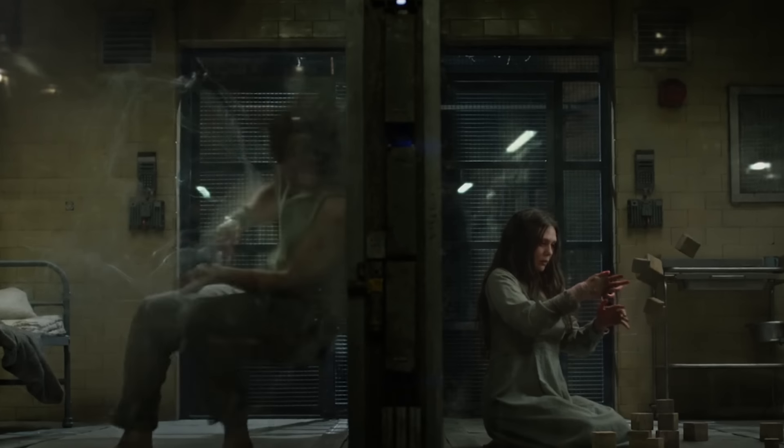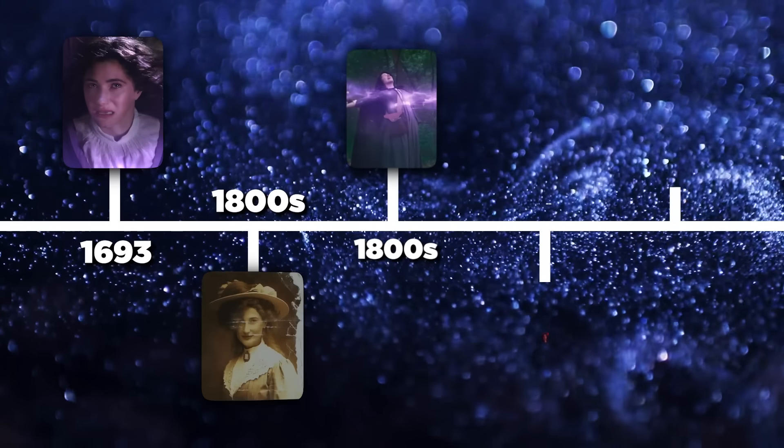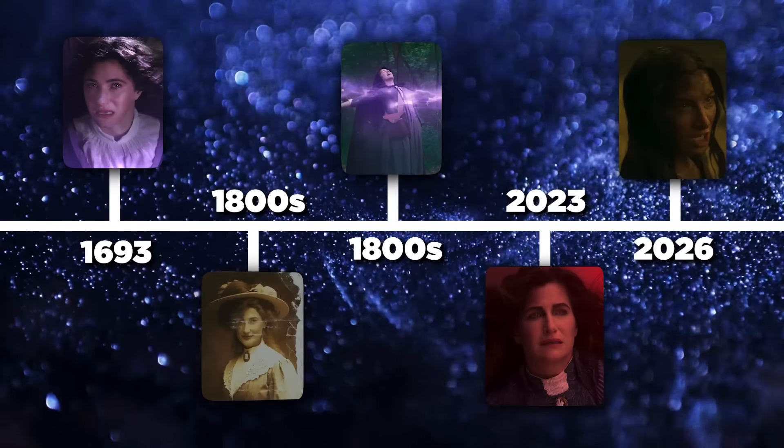The history leading up to Agatha All Along encompasses at least 10 Marvel Studios titles including Captain America: The Winter Soldier, Avengers: Age of Ultron, Captain America: Civil War, Avengers: Infinity War, Avengers: Endgame, WandaVision, Doctor Strange and the Multiverse of Madness, Werewolf by Night, and Agatha All Along's promo material. I'm going to arrange the important events in chronological order, beginning in ancient times.